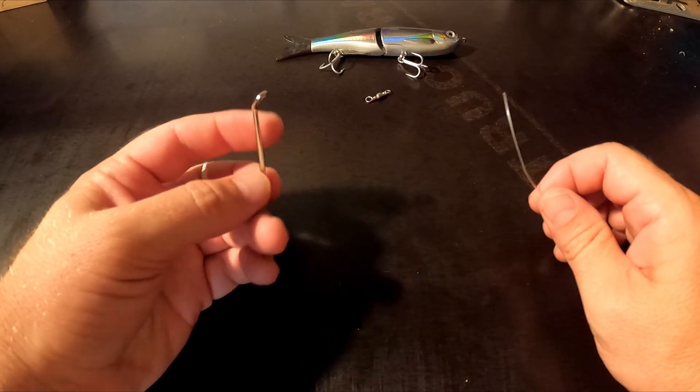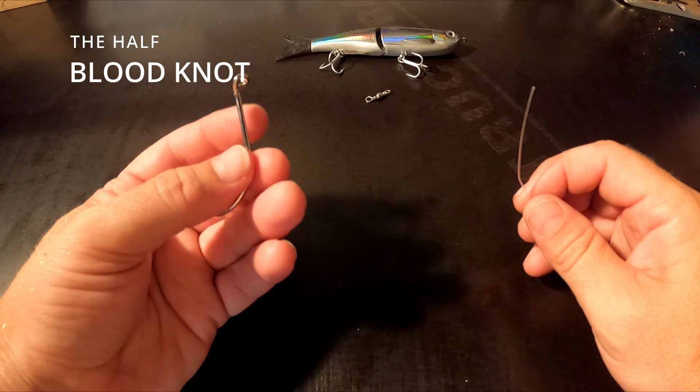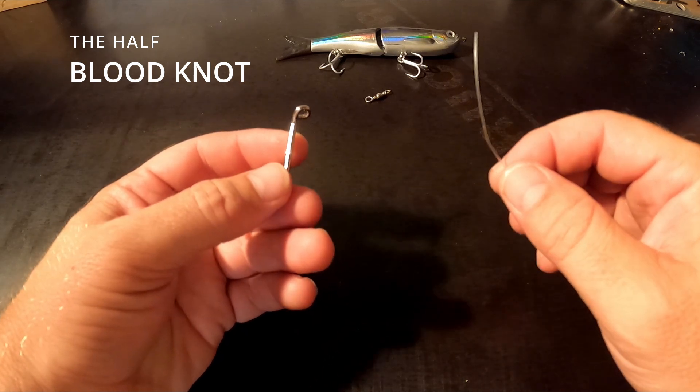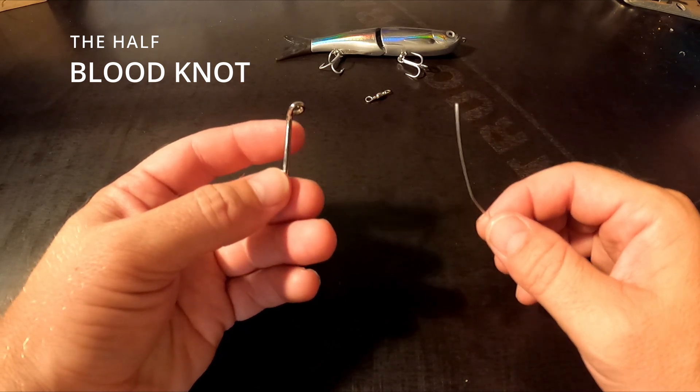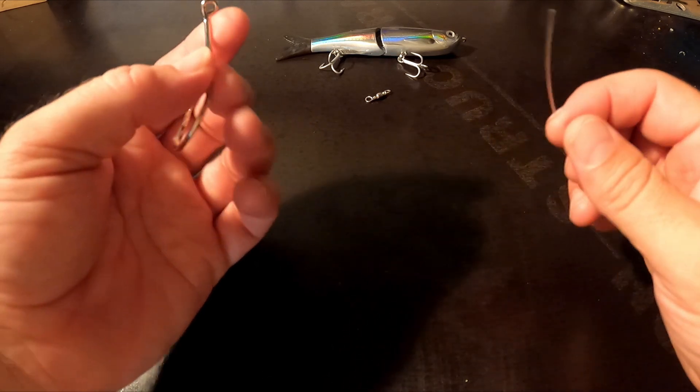Hi guys, so you're new to fishing and you want to learn how to tie your hook onto your fishing line. I'm going to show you a knot called the half blood knot. It's a very basic, easy to learn knot for beginners. It's the very first knot I learned how to tie and I still use it today. It's a very strong knot.